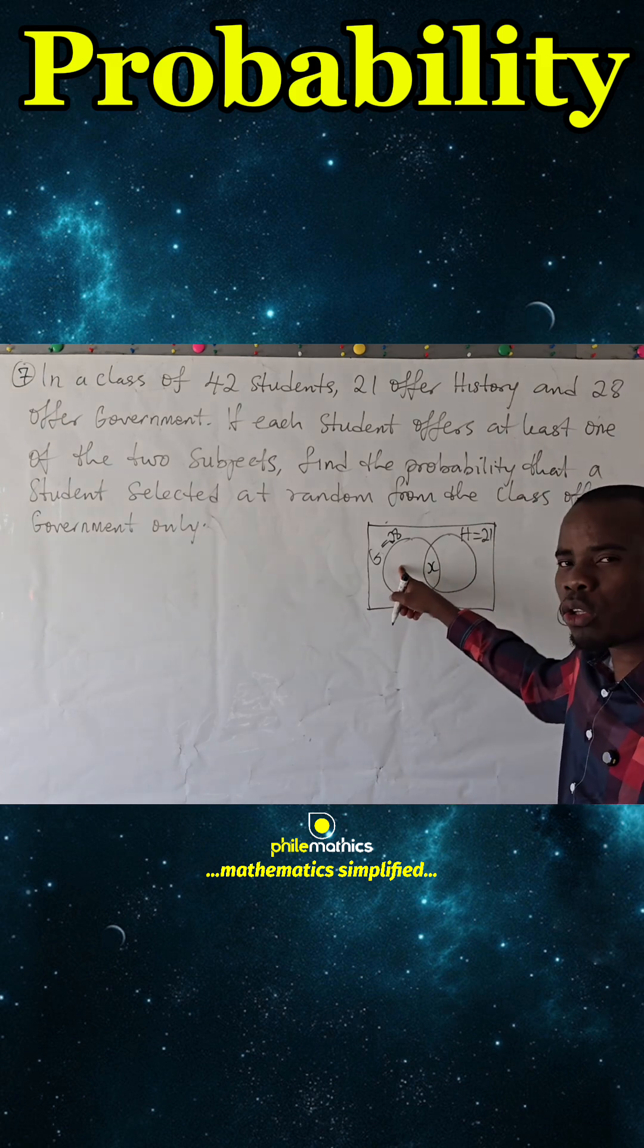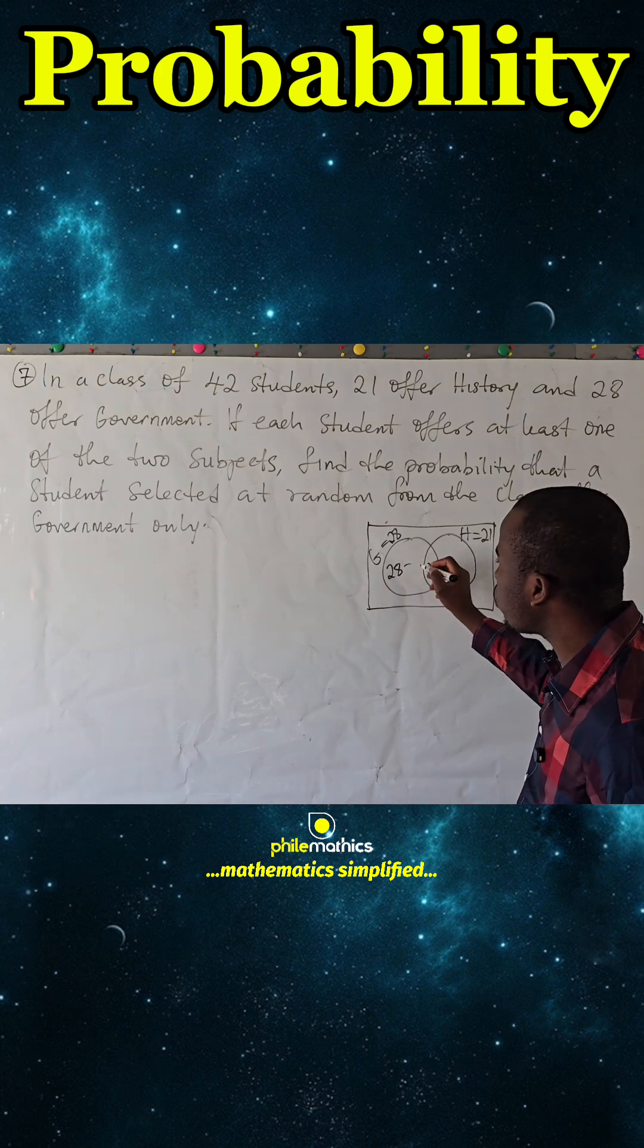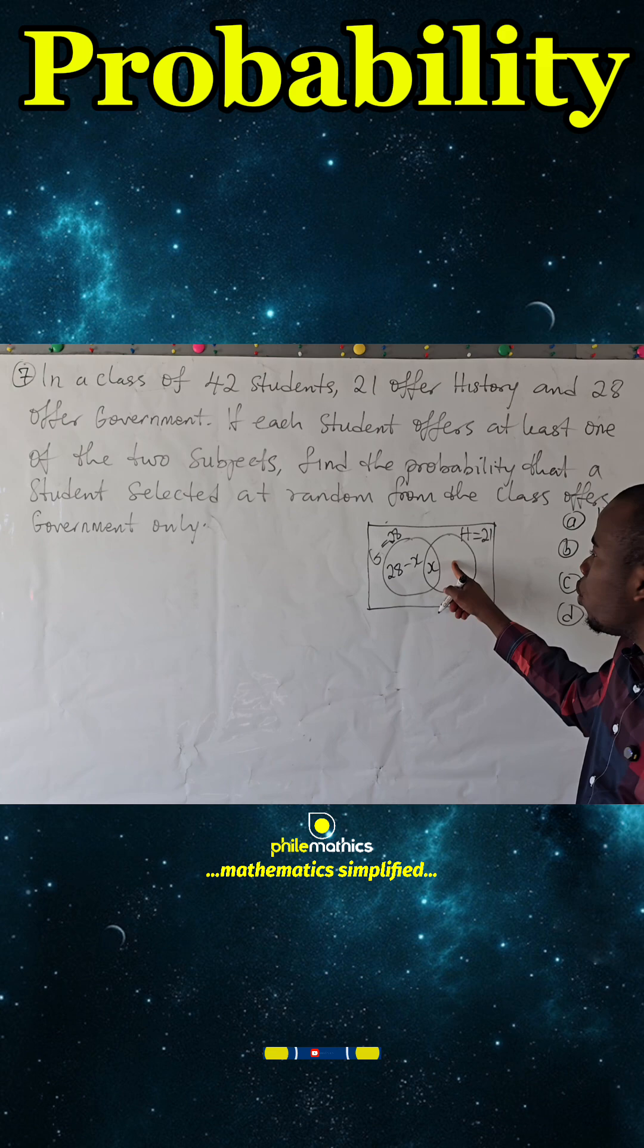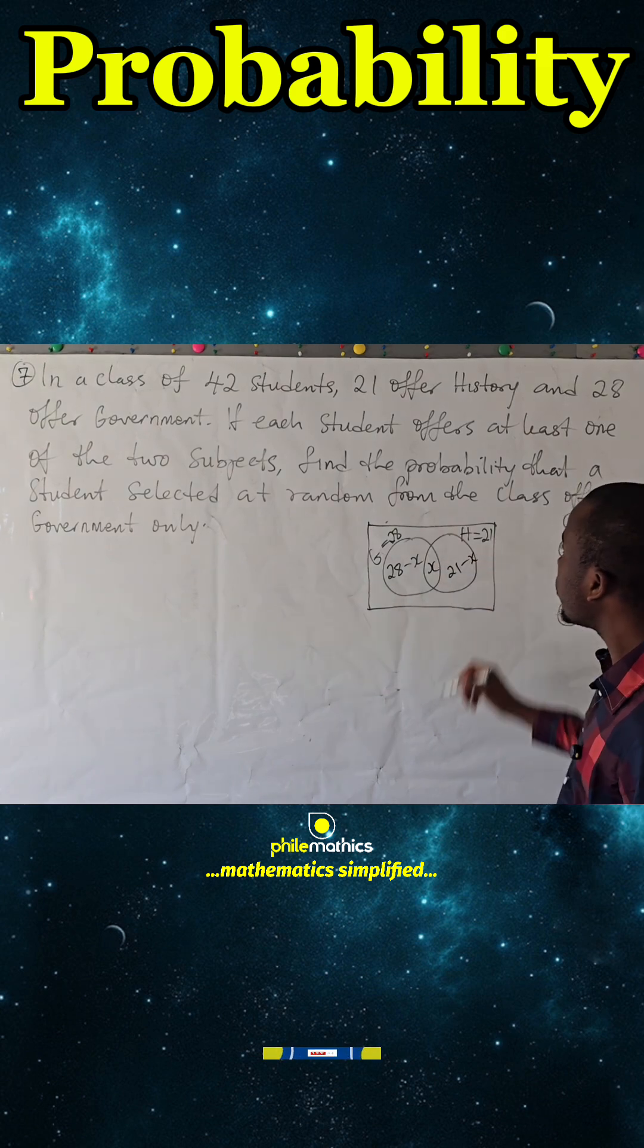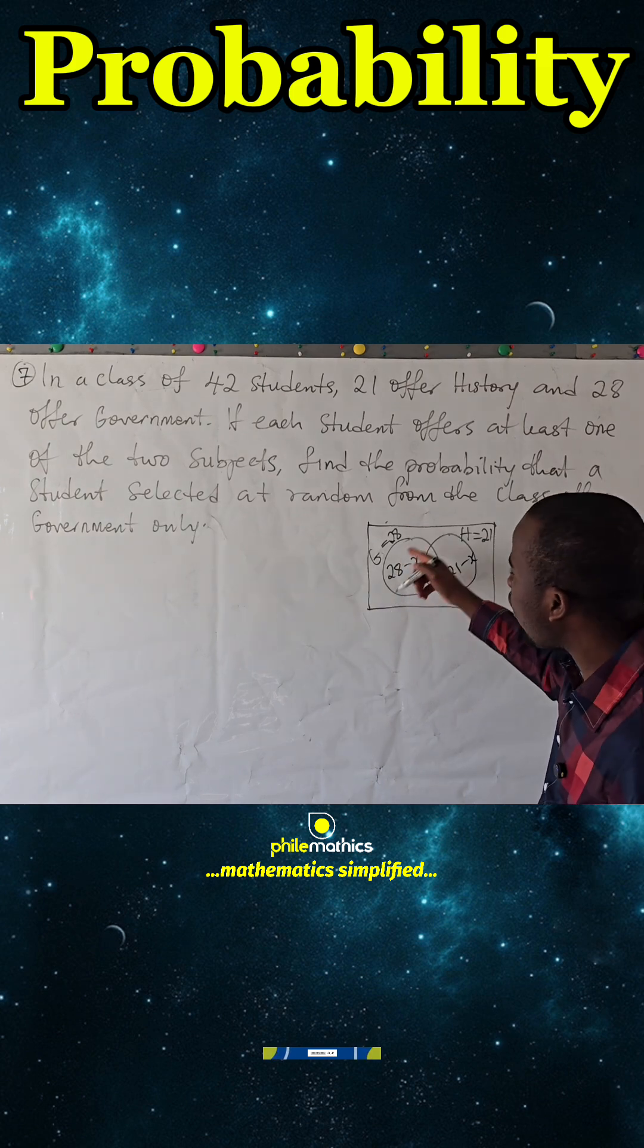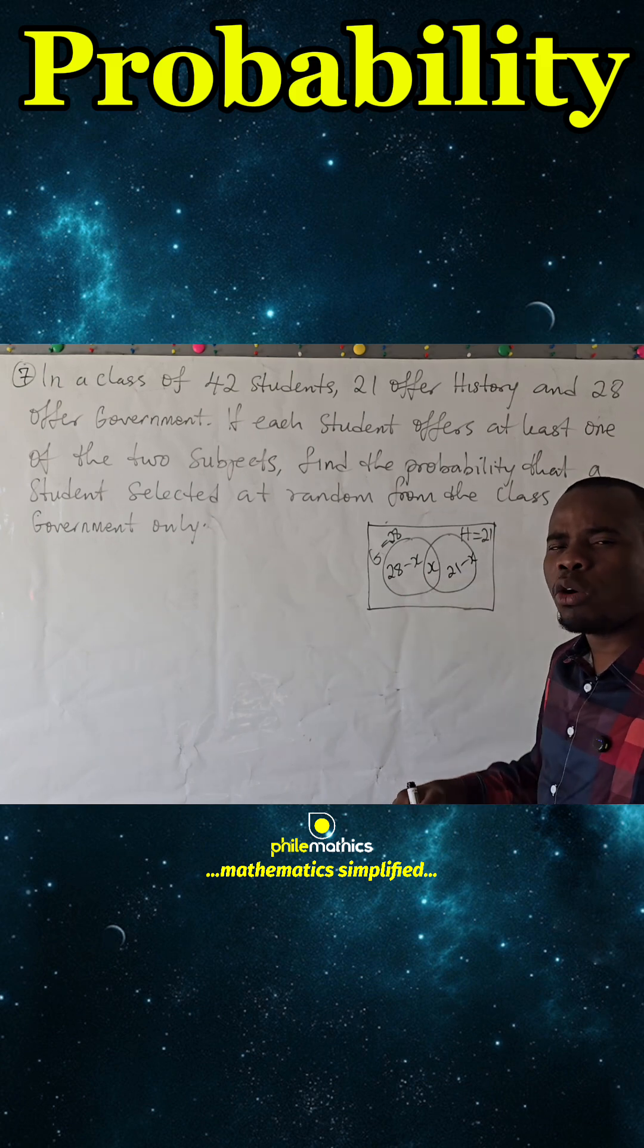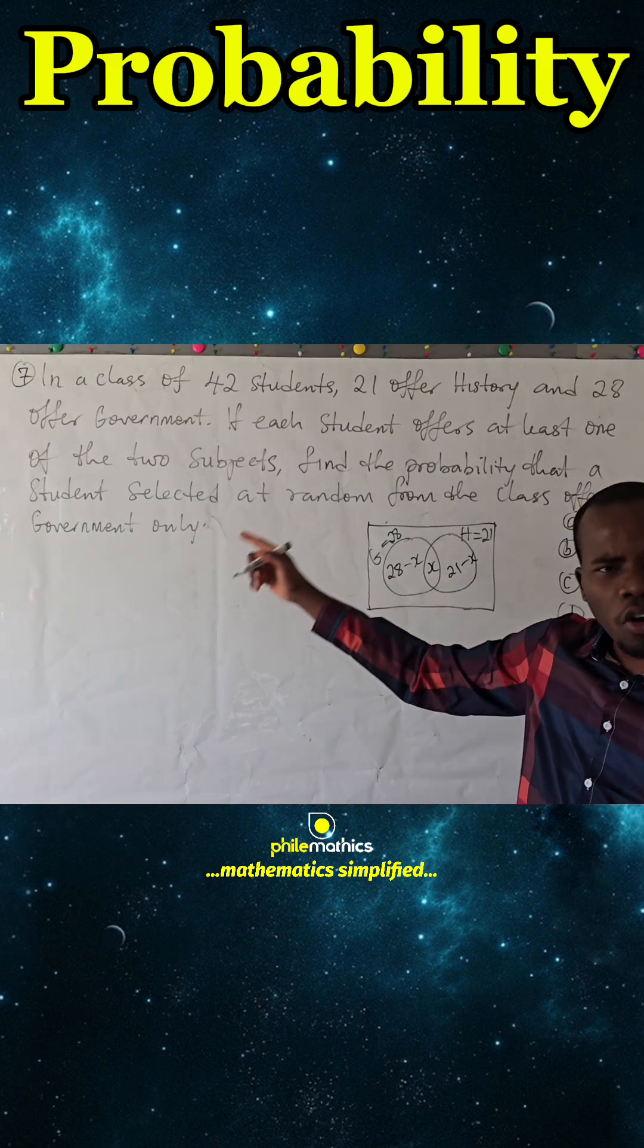So those that studied Government only, which we are much interested in, will be 28 minus those that studied both. And those that studied History alone will be 21 minus those that studied both. Since each student offers at least one of the two, let's find X first before we think of finding the probability of those that offer Government only.